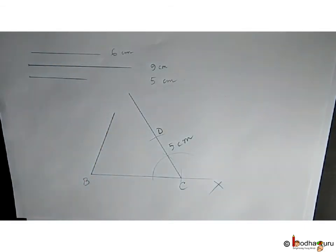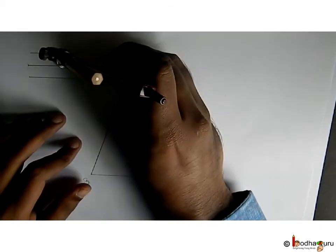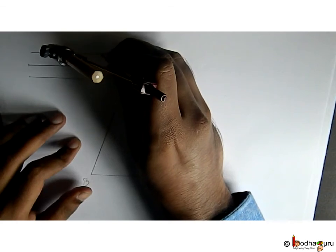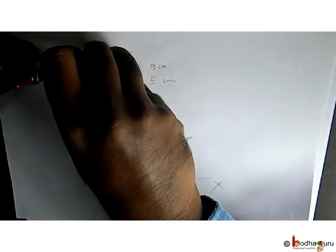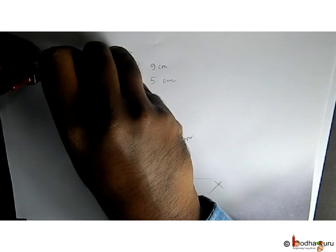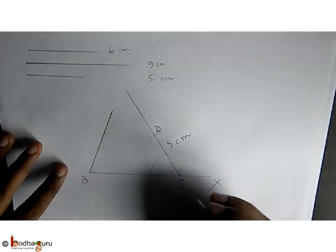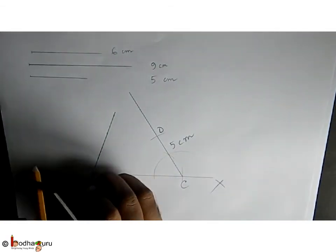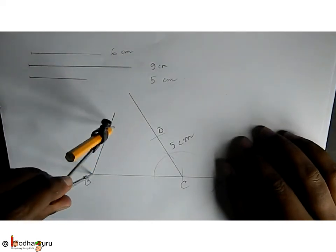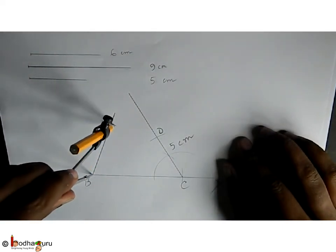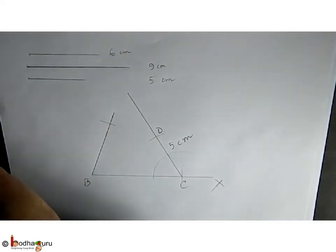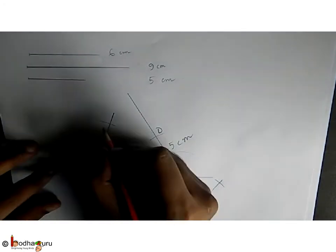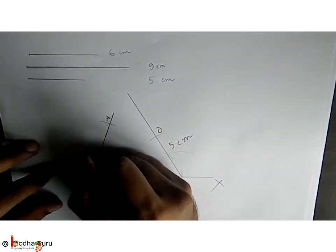We need AB equal to 6 cm. So we take 6 cm radius in compass using the 6 cm line segment we drew for reference. Put needle on B and draw an arc that crosses the line. This will be AB 6 cm long and angle B equal to 70 degrees.